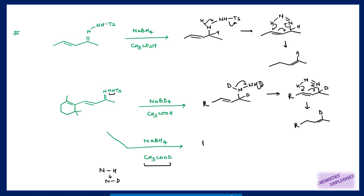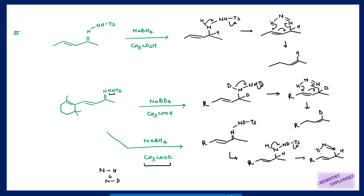With deuterated acetic acid, the first step is exchange of the NH hydrogen to give ND. Then NaBH4 reduces this C=N bond, placing H here. Next, this bond breaks, the tosyl group is removed, and then the [1,5]-sigmatropic shift of H occurs — giving H at one position and D at the other. This product is different from what you get with NaBD4 plus regular acetic acid. The key point: when deuterated acetic acid is used, first do the NH-to-ND exchange, then carry out the rest of the mechanism.